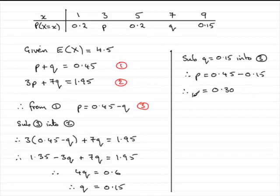So that gives us our two values for p and q. That brings us to the end of this part of the question.